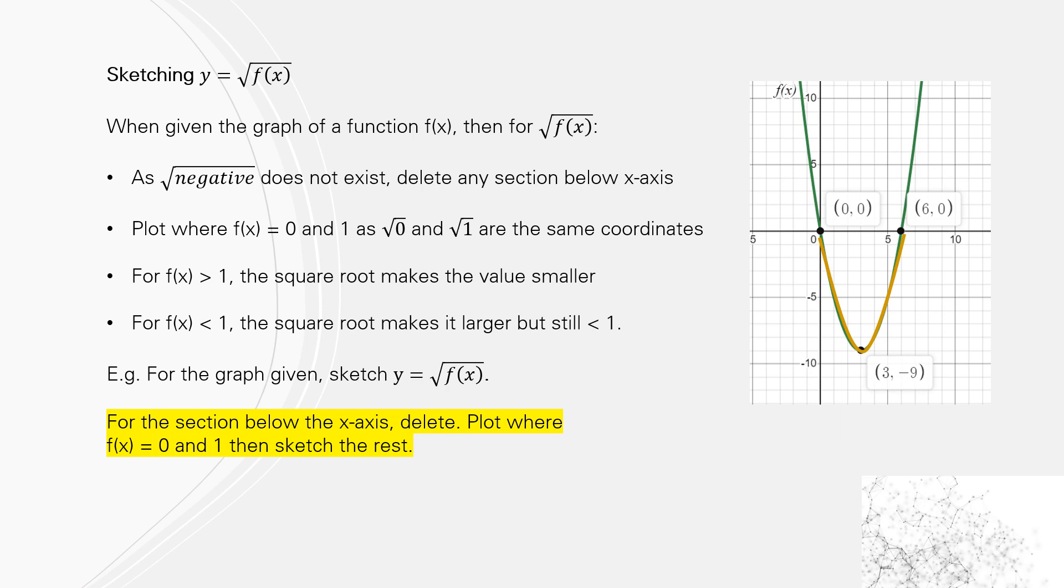We're going to plot where the function equals 0, so basically where it crosses the x-axis, and 1, and then we're going to sketch the rest. So these will become two sideways parabolas, one going to the right, one going to the left.